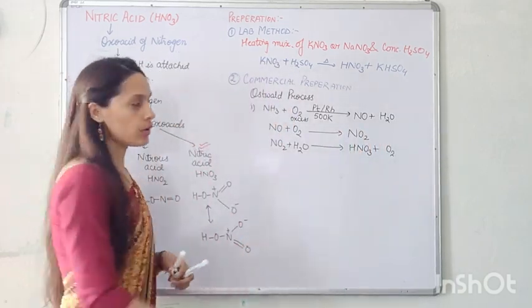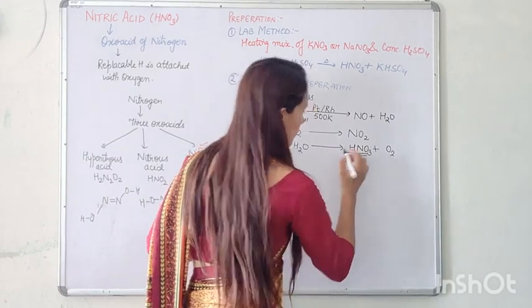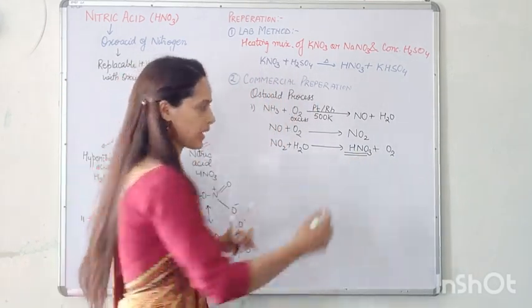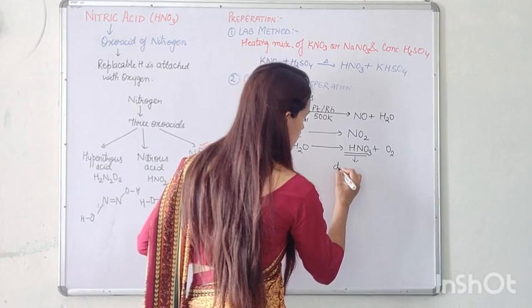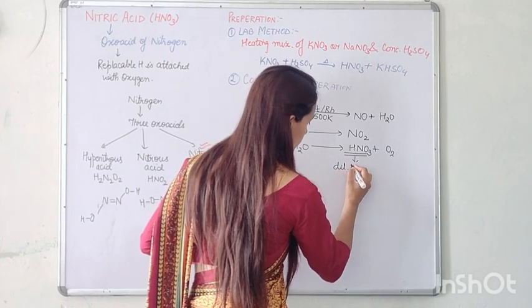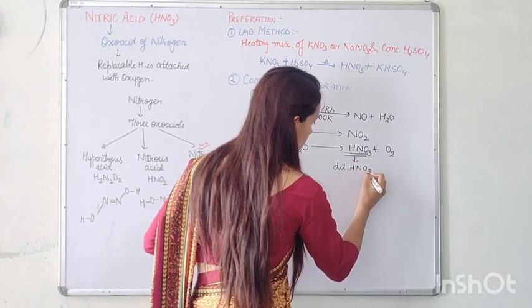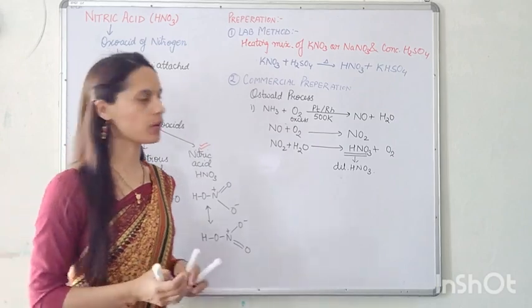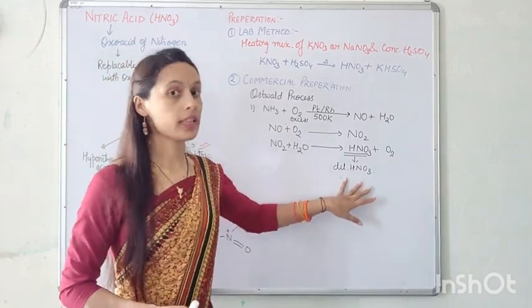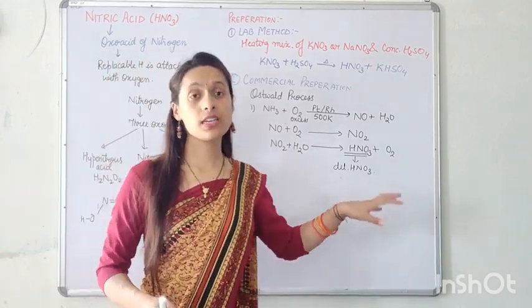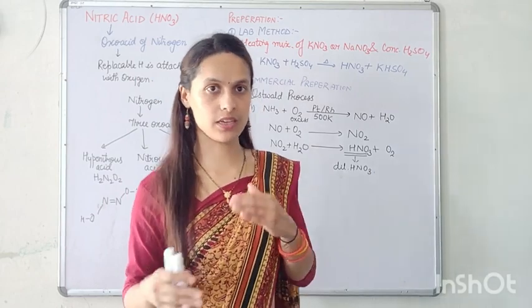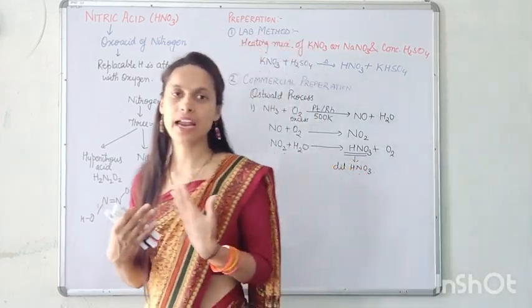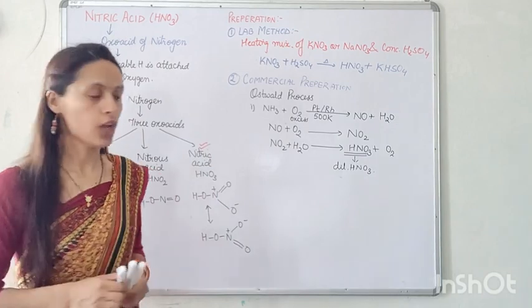This NO2 reacts with H2O to form HNO3 plus O2. So the HNO3 obtained from this third step is actually very dilute HNO3. We have to concentrate that dilute HNO3.